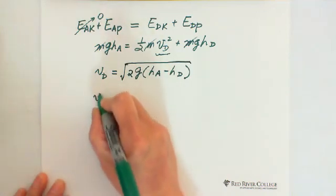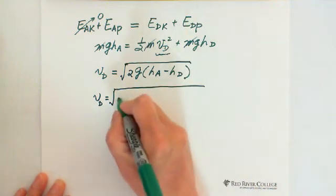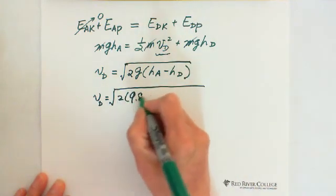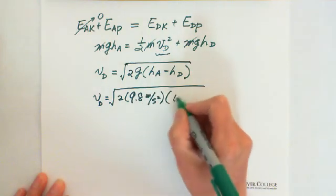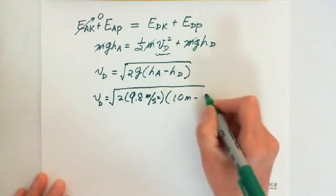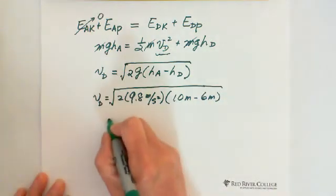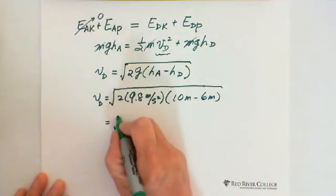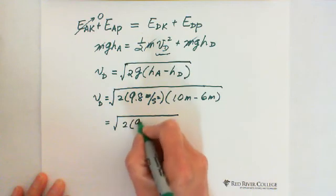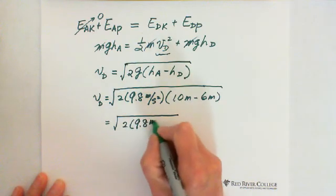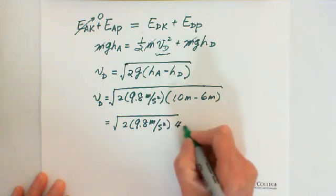Okay. Then we can find V_D equals square root, and plug in the numbers. 2 times 9.8 meters per second squared, times H_A is 10 meters, subtract H_D is 6 meters.